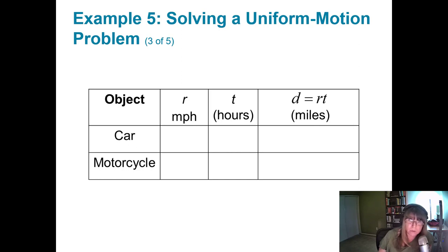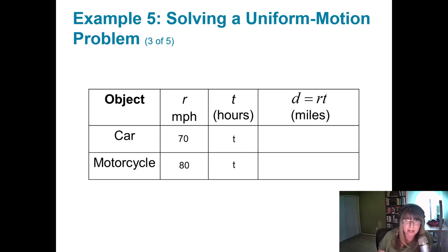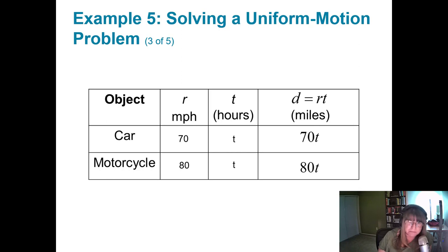I'd like a table for this since D equals RT. The car is driving 70 miles per hour and the motorcycle officer is driving 80 miles per hour. T is our unknown. Using D equals RT, the car's distance is 70T and the officer's distance is 80T. The key insight is that the motorcycle officer has to drive one more mile because he's one mile behind the car — he has to drive one more mile than the car.